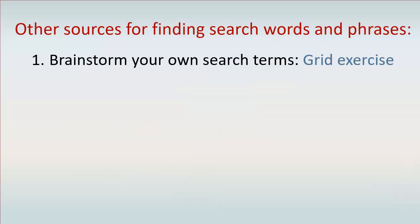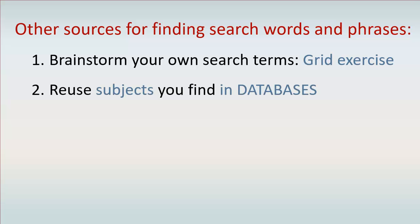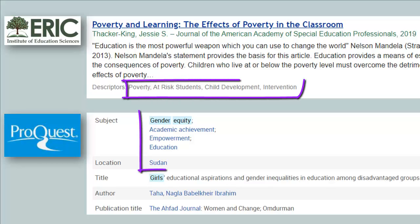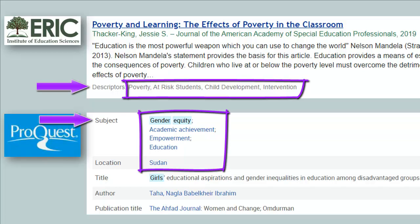Other sources for finding search words and phrases: in addition to brainstorming your own search terms using the grid exercise, you'll want to reuse subjects you find in library databases or other information sources. Article databases like ERIC and ProQuest contain their own search language. If you find subjects or descriptors which interest you, add them to your grid and use them when you search.